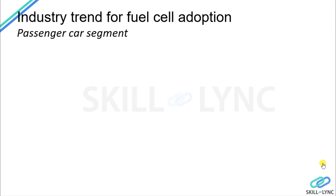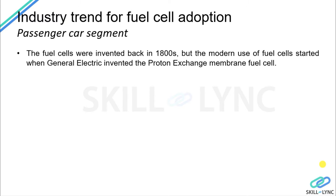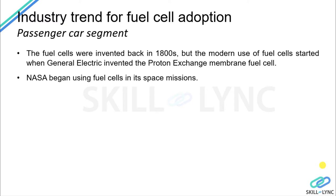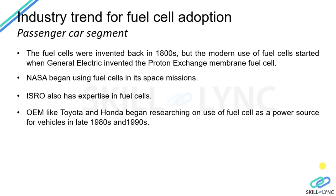Let's look at how the fuel cell has been adapted across the industry. The automotive industry can be divided into a passenger car segment and a transportation segment. Fuel cells were invented back in the 1800s, but at that point they were big components not quite fit for automotive purposes. A continuous research and development effort followed, with the major breakthrough coming when General Electric invented the proton exchange membrane fuel cell — the kind used in the automotive industry currently. Even before reaching the automotive industry, fuel cells were preferred by the space industry; NASA began using them in space missions in the 1900s, and ISRO has also developed expertise through space exploration missions.